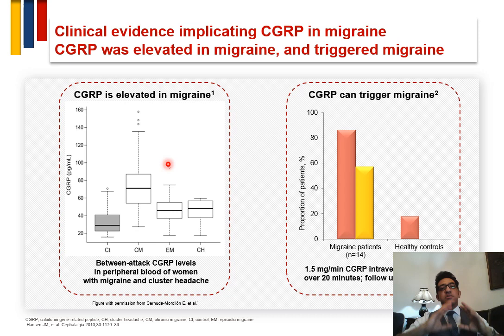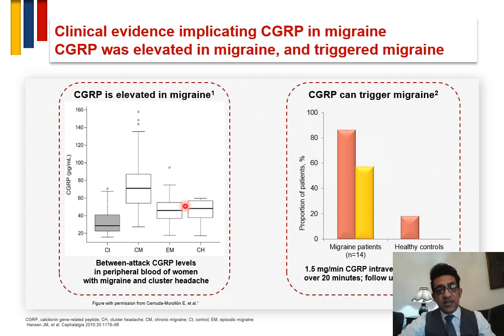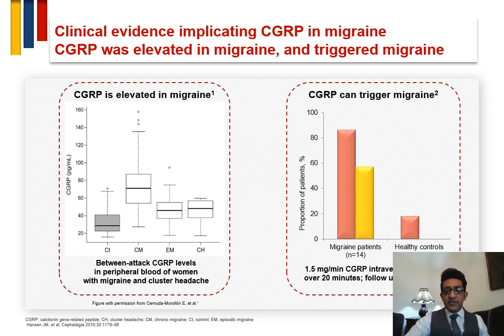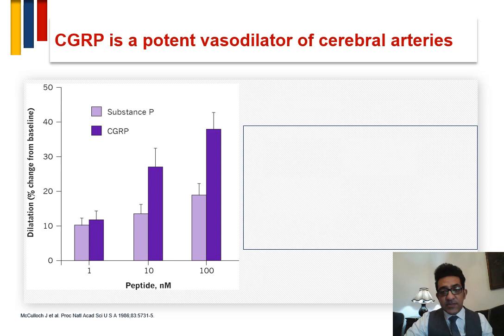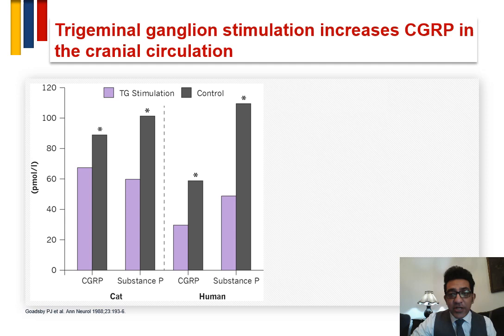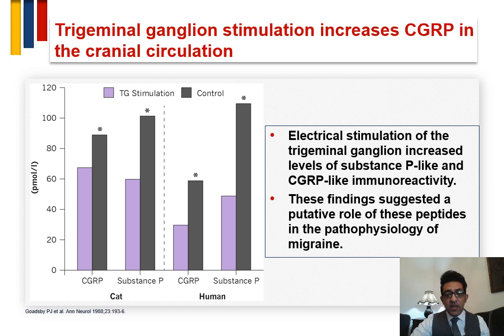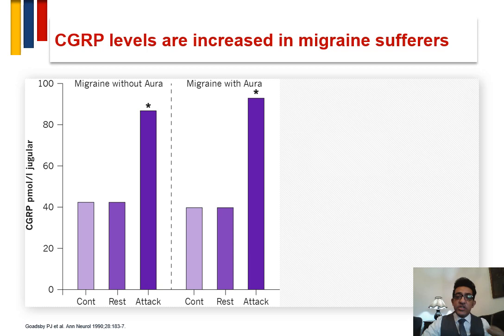Moving to the clinical evidence implicating CGRP in migraine pathophysiology: many studies have found that CGRP is elevated in migraine, and CGRP can trigger migraine if injected intravenously over 20 minutes. CGRP was found to be a potent vasodilator compared to substance P. Trigeminal ganglion stimulation increases CGRP in cranial circulation, and CGRP levels are increased in migraine sufferers both with and without aura.